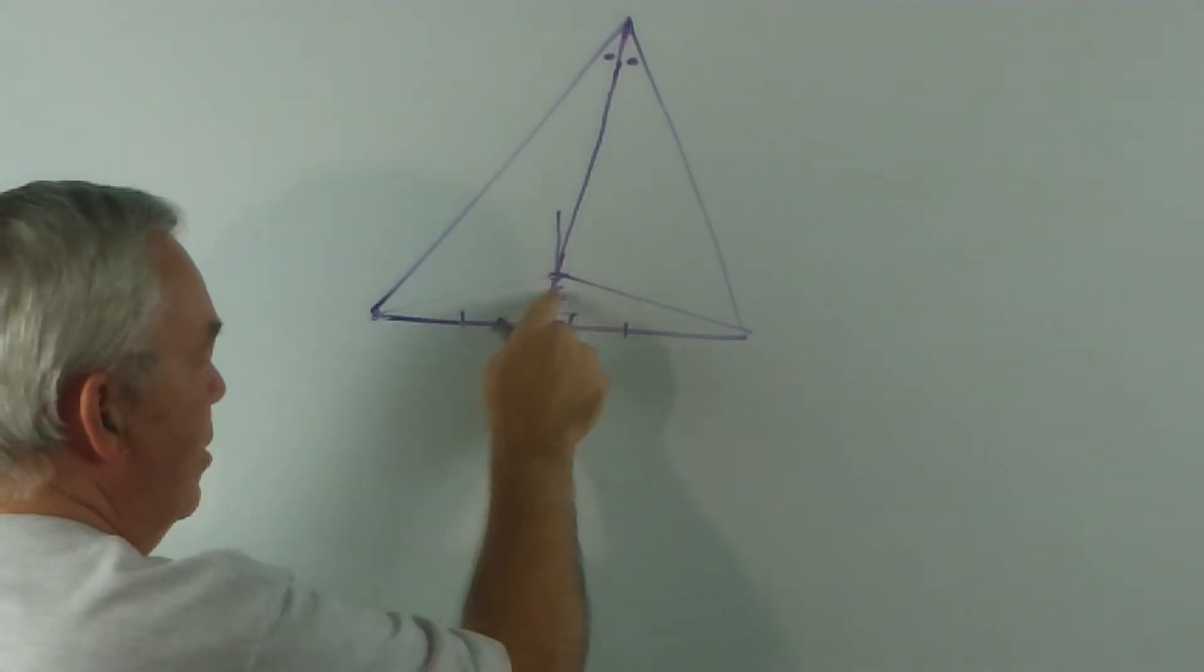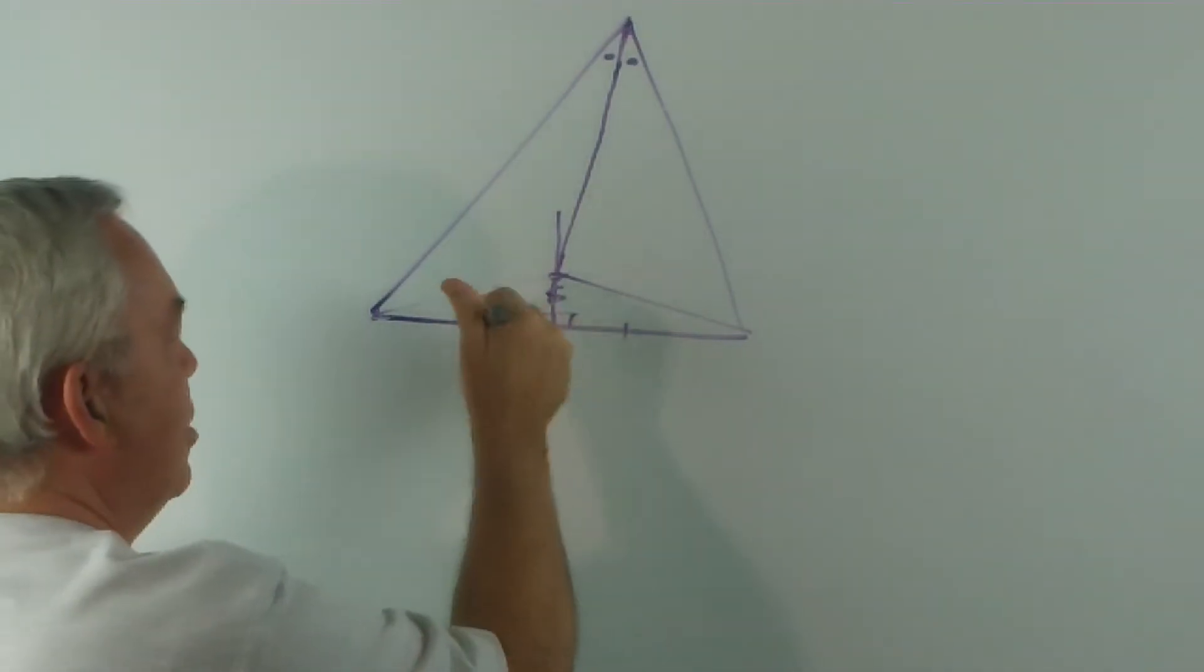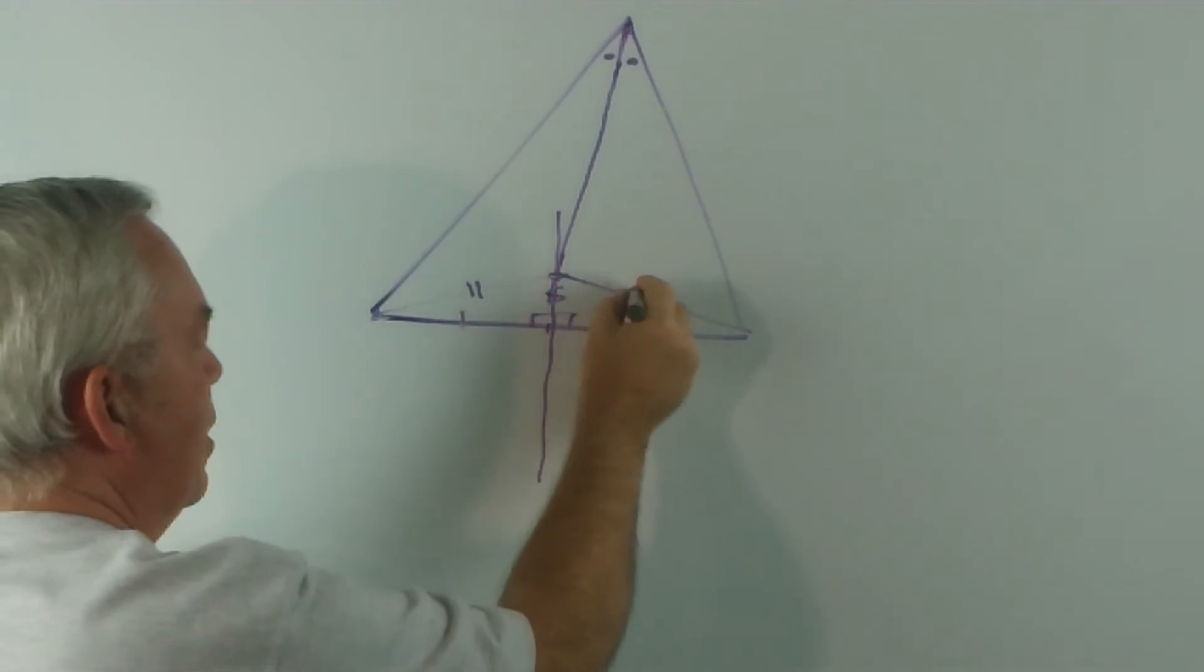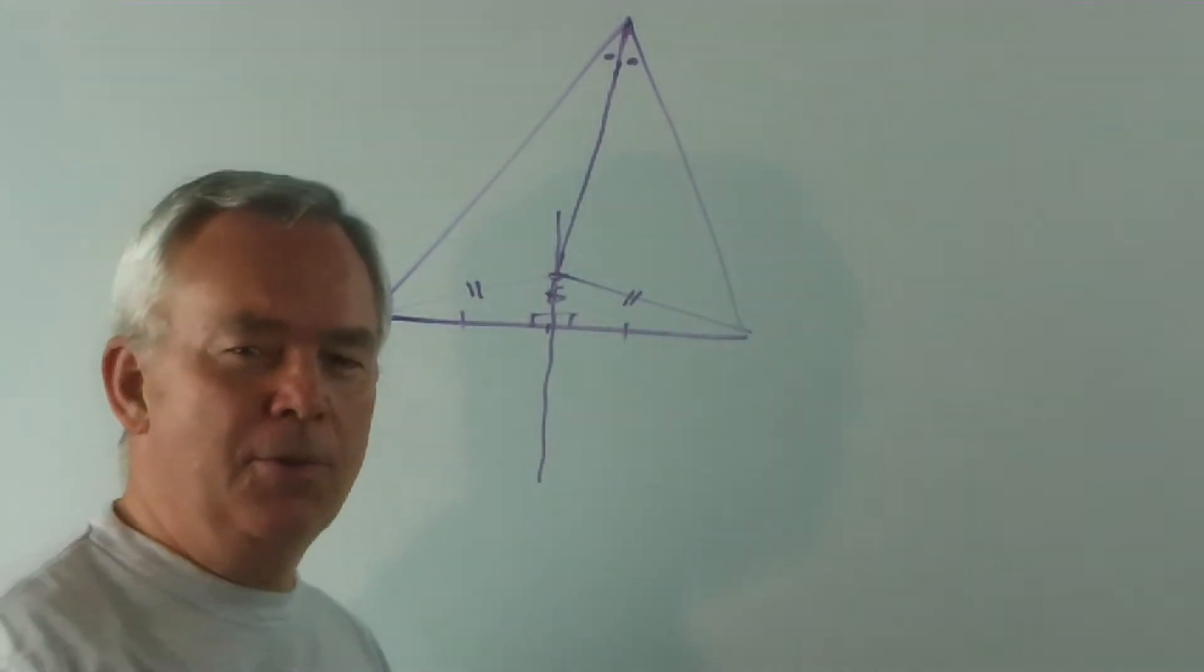So because of side-angle-side matching a side-angle-side, these are congruent, which means they're identical, which means that this length equals that length. I think you'll agree with that.